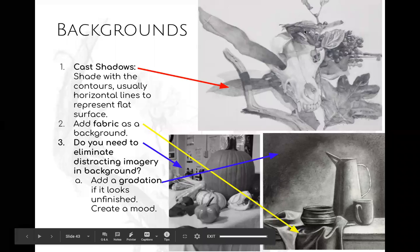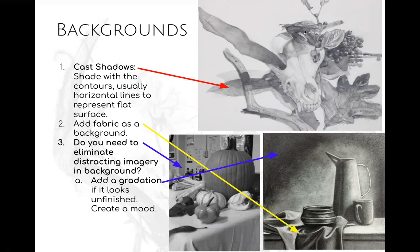So many of you are finishing up adding value to your objects, and I just want to remind you that you need to have foreground, so things in front, middle ground where things are overlapped or behind, and then background. And so for your backgrounds, you have some options.